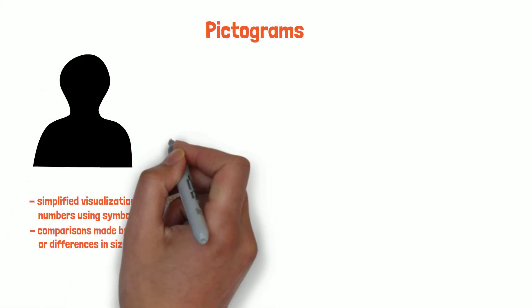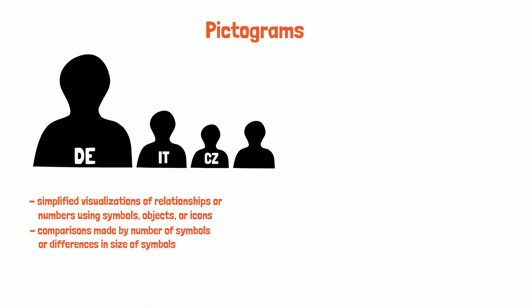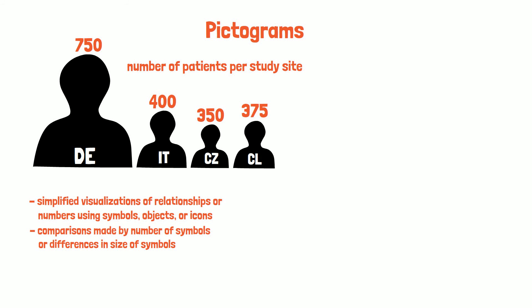Comparisons are made by the number of symbols or differences in the size of the symbols, for example, the number of patients per study site. It allows additional information to be presented, such as the context of the graphic, but may be misleading and may make comparisons more difficult to identify at a glance.